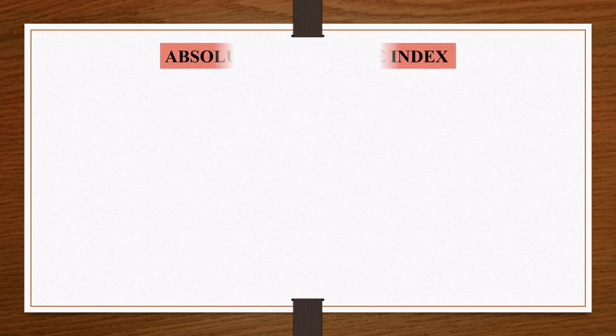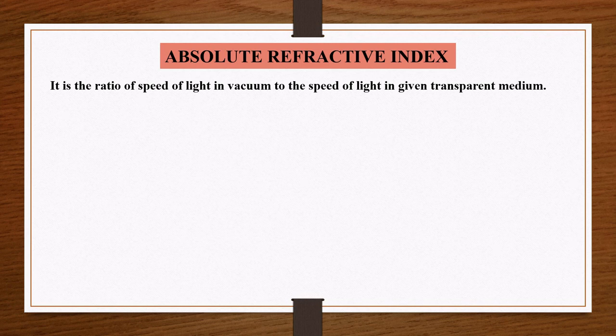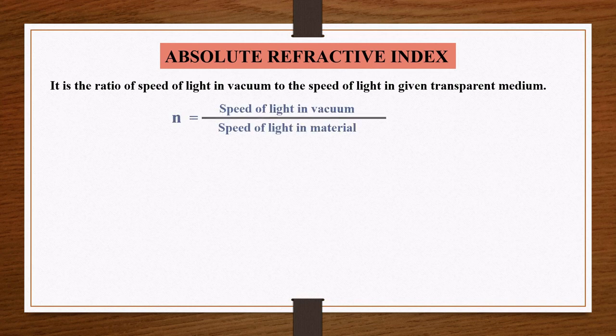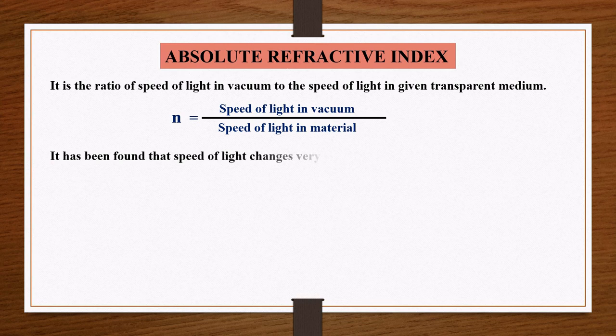Now what is absolute refractive index? It is the ratio of speed of light in vacuum to the speed of light in a given transparent medium. So absolute refractive index n is equal to speed of light in vacuum divided by speed of light in the material.